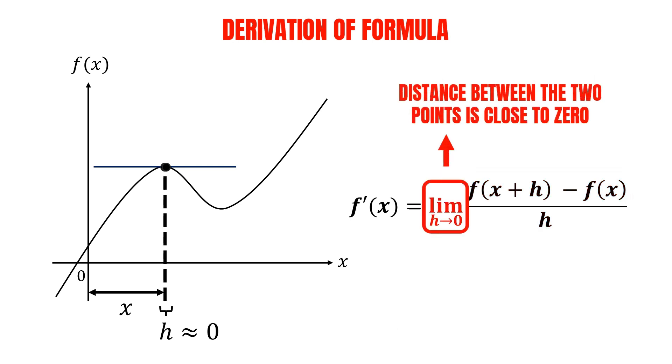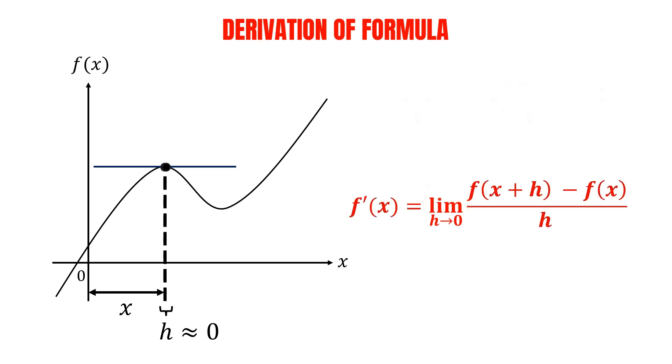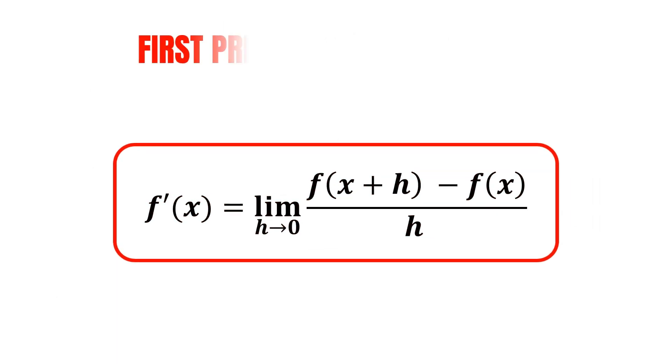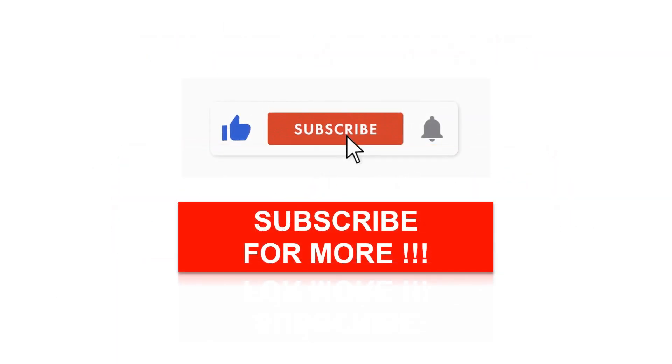Where this part of the expression represents the gradient of the secant line, while this part refers to the distance between the points becoming very close to zero. And that's how we derive the formula for the first principle of derivatives. I trust you'll find this video helpful in understanding the derivation of the formula. Thank you.